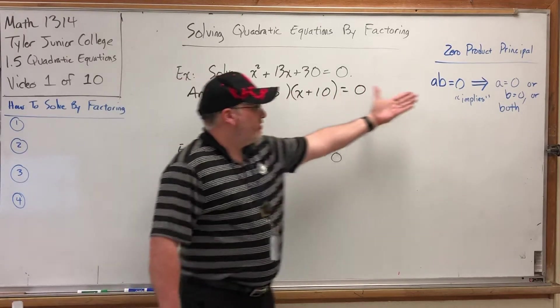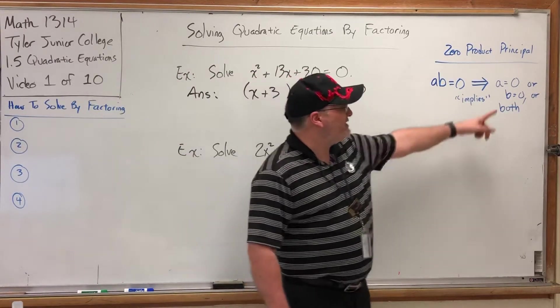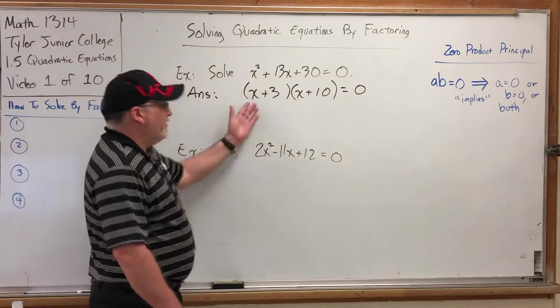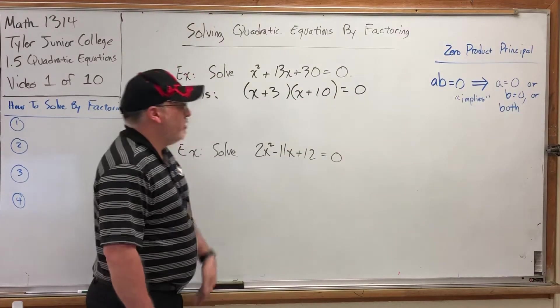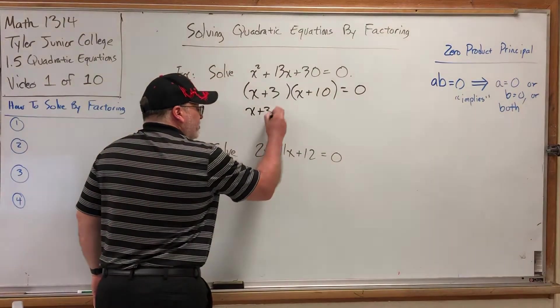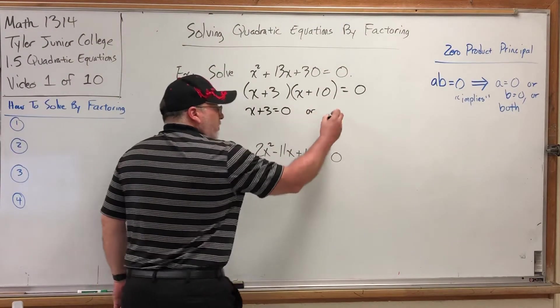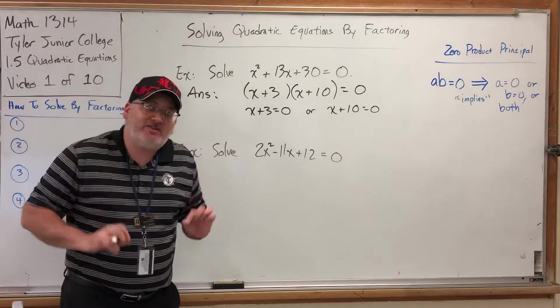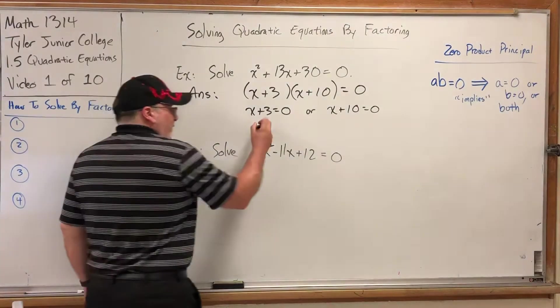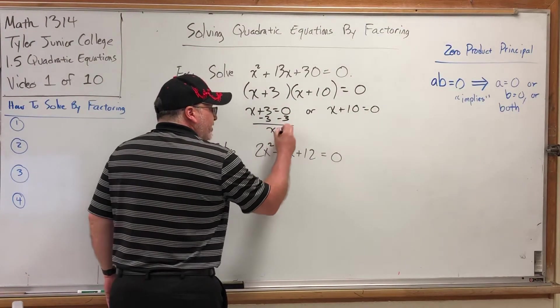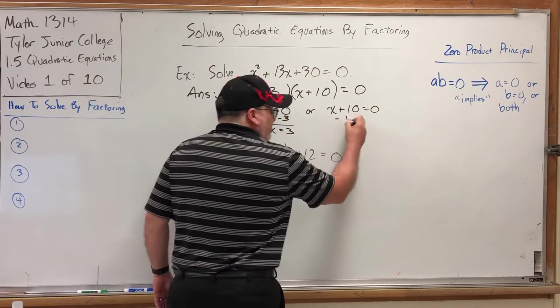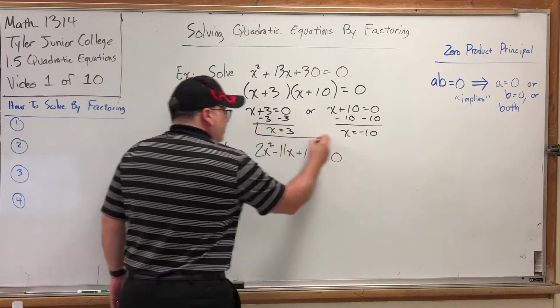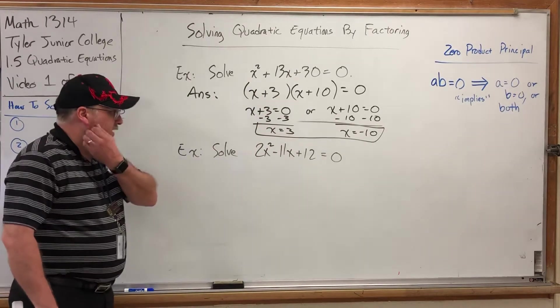But if you get it factored, and by the way, it doesn't matter if you write x plus 3 first and x plus 10 second or vice versa as long as you have the correct factors. But now that we have a product equal to zero, the zero product principle says we can basically split this into two separate equations. We can say, all right, this multiplication problem is equal to zero, so the first factor is equal to zero or the second factor is equal to zero. And if you'll notice, that separates the x's and now we can solve for each one. Solve for the first equation by subtracting 3 on both sides and get x equals negative 3. Solve the second equation by subtracting 10 from both sides and get x equals negative 10. So we have two solutions.